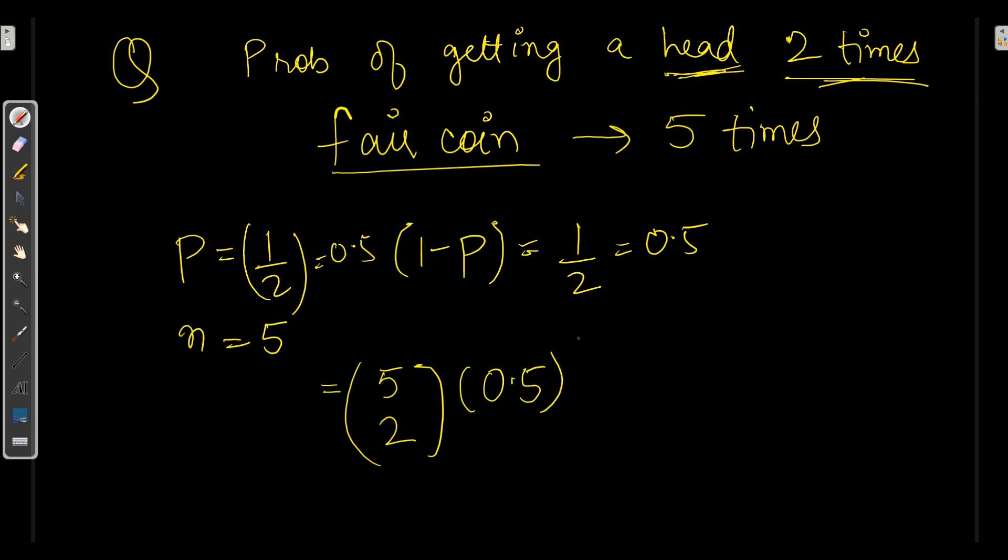We can say the probability of getting head two times with 0.5 for head to the power 2. And probability of failures will be 0.5 to the power 5 minus 2 which will be 3. So when we calculate this, we will have 5 factorial upon 2 factorial times 5 minus 2 is 3 factorial. And here we will have 0.25 and this will be 0.125.